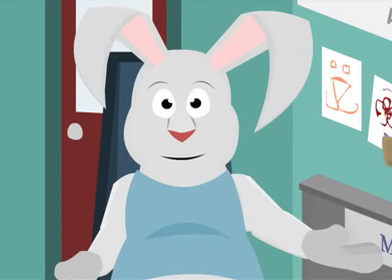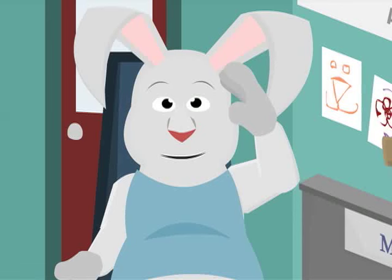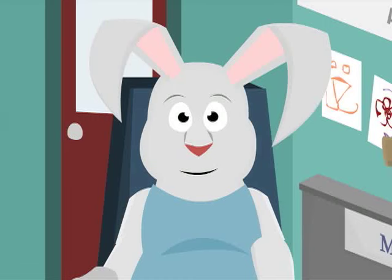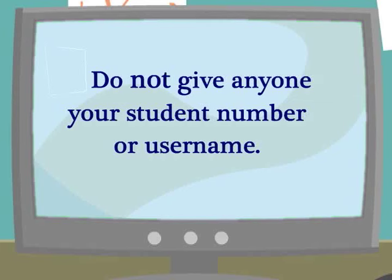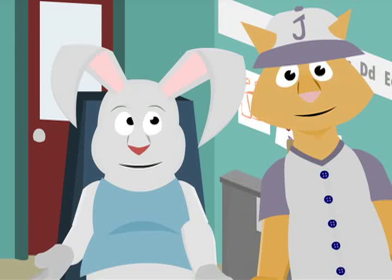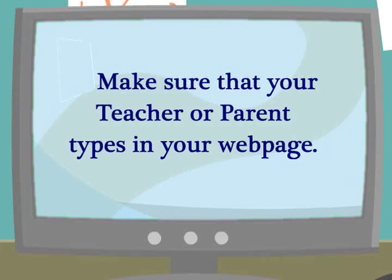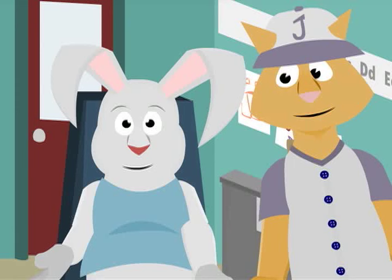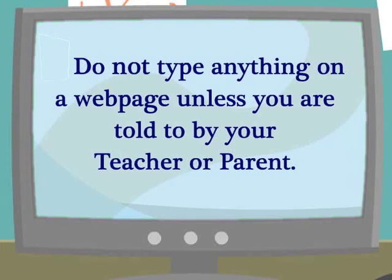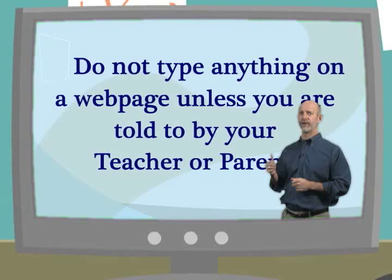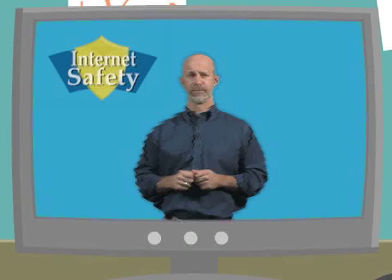That does it for our three rules today. Do you have any questions, Bobo? No, not that I can think of. Can you remember the three rules? Don't give anyone my username or student number. I can do this. Don't go to any web page my teacher or parents haven't set up for me. And don't type anything like my name or anything in a box. Yes, that's right. Those are the three rules. If you can't read this, don't worry, but that's what the words say on the screen behind me. These are the three rules.